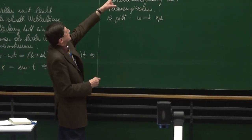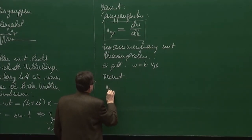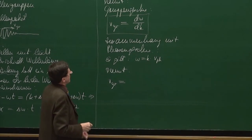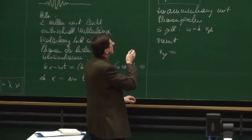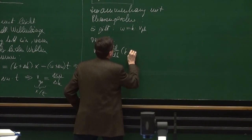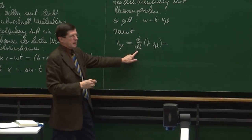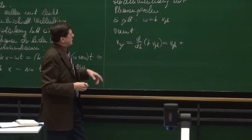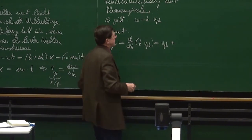Da können wir es natürlich sofort einsetzen. Die Gruppengeschwindigkeit ist gleich dω/dk. Jetzt haben wir d/dk von (k mal v_Phase). Das ist ein Produkt, das differenziert werden muss. Also: dk/dk mal v_Phase, das ist eins mal v_Phase, plus k mal dv_Phase/dk. Und jetzt werden Sie sich denken, die Phasengeschwindigkeit, das ist doch was Konstantes. Warum schreibt er das hin? Das ist doch null.